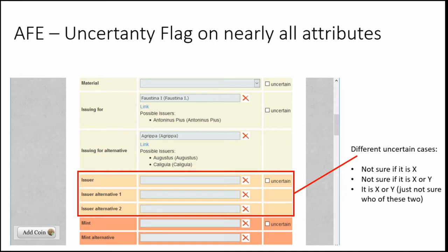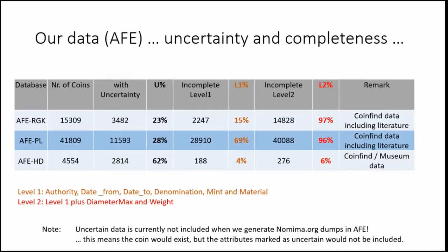But what do we actually mean by uncertainty? For example: I'm not sure if it is a gripper, I'm not sure if it's Faustina, or I'm not sure if it's either of them. So what do we mean here? This is one of the first problems — we have to understand what we mean when we talk about uncertainty.